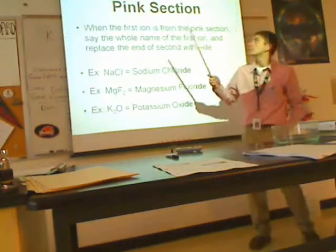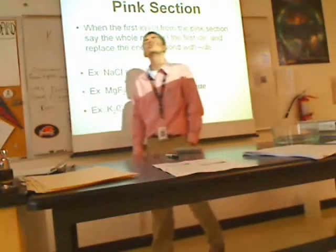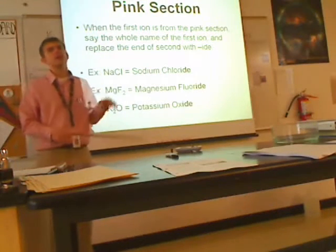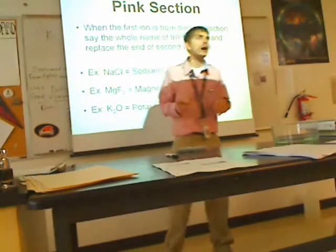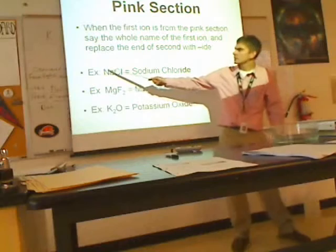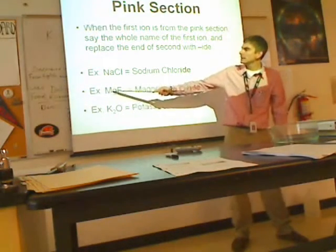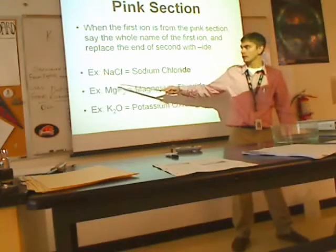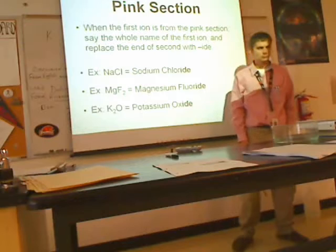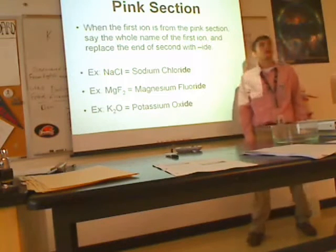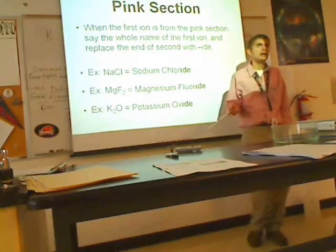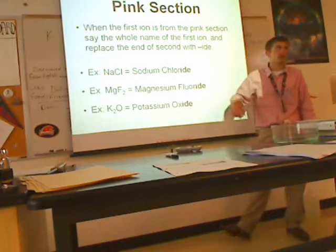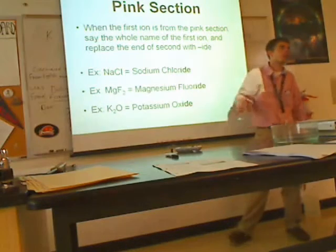Let us begin with the pink section. The pink section — you cannot get any easier if you try. Simply say them out and add '-ide' to the end. We already talked about how to combine ions and make ionic compounds. Sodium is a plus one, chlorine is a negative one, so they just go together. Magnesium fluoride, potassium oxide, sodium fluoride — really easy.